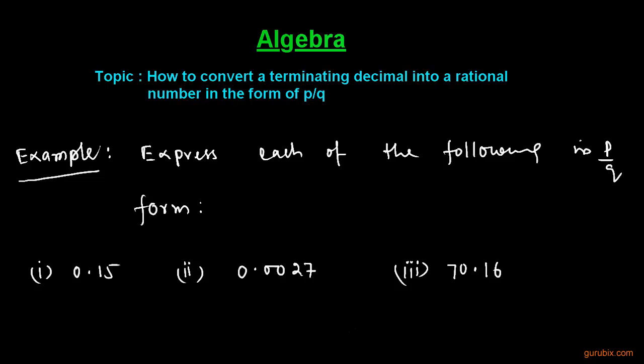Welcome friends! In this video, we shall learn the topic: how to convert a terminating decimal into a rational number of the form P over Q. We shall learn this topic by an example. Express each of the following in P by Q form. This example has 3 parts.